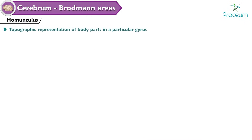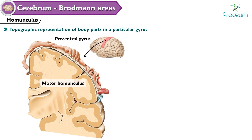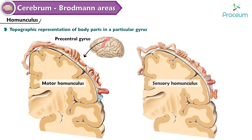Homunculus is a topographic representation of body parts in a particular gyrus. The motor homunculus represents body parts in the precentral gyrus of the frontal lobe; the sensory homunculus represents body parts in the postcentral gyrus of the parietal lobe.